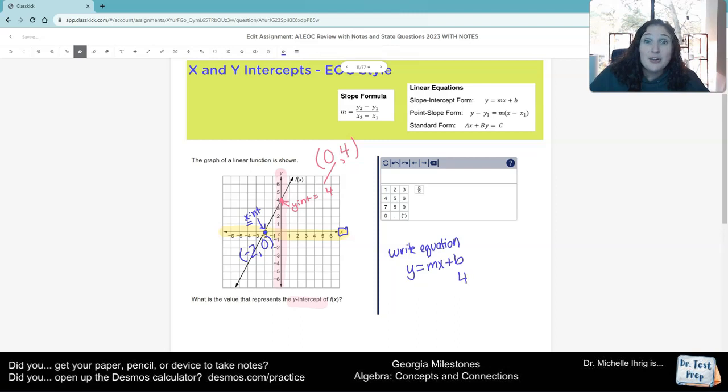We know our b value is positive 4. We just need to know our slope. And remember for our slope, which is represented by the letter m, it is rise over run. So if I start here, I climb 4 spaces and I go over 2 spaces.